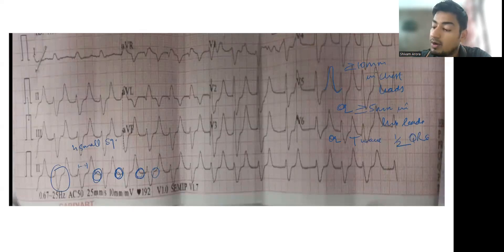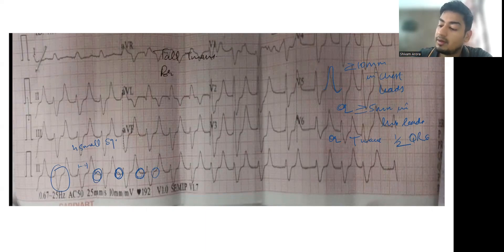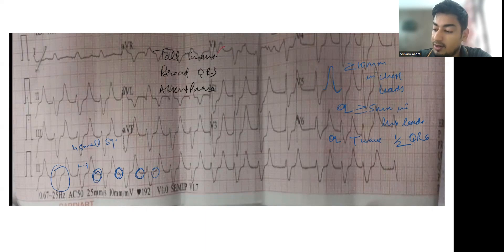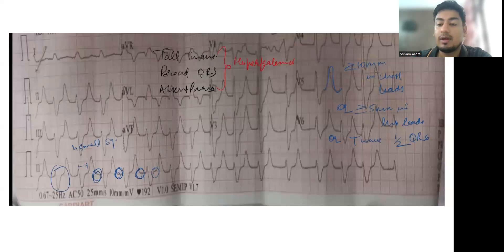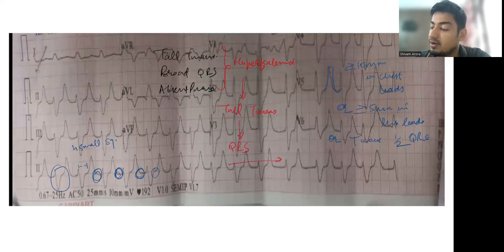We have tall T waves, broad QRS, and absent P waves — all these features point towards hyperkalemia. In hyperkalemia, tall T waves are generally followed by broad QRS, which is generally followed by absence of P waves, and ultimately a sine wave pattern.